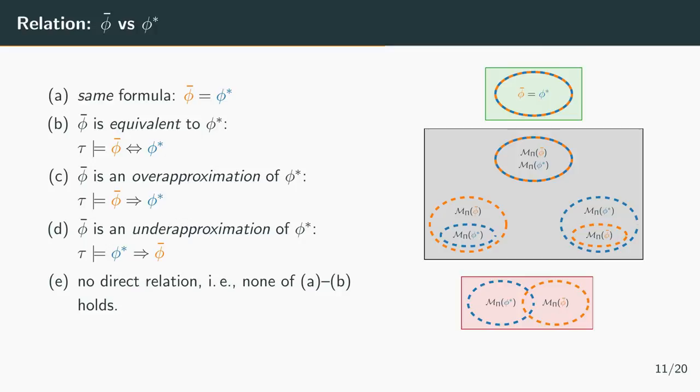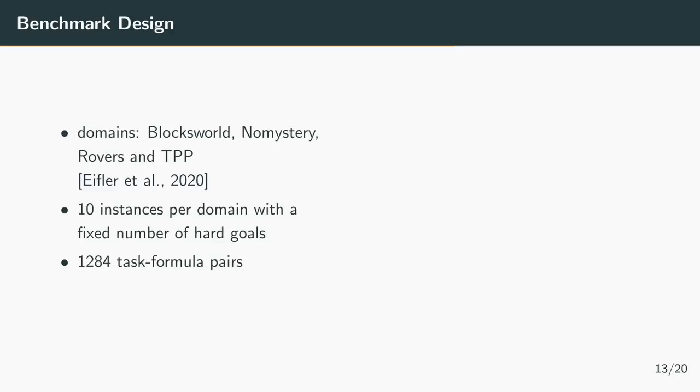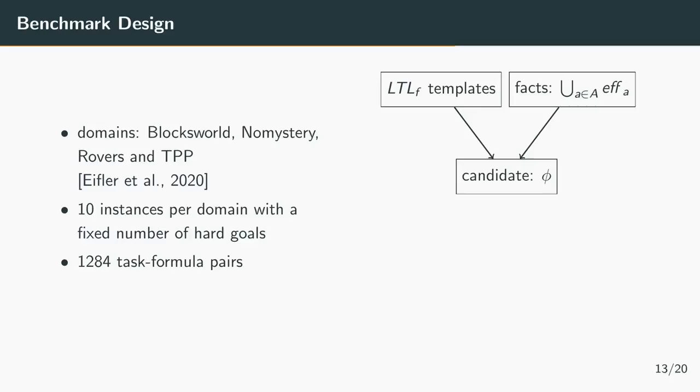Now I want to describe in more detail how we evaluated the approach. We didn't use real users but instead we simulated them with a hidden target formula. To generate a benchmark set we used four domains: blocksworld, numystery, rover, and ttp, each with 10 instances. To generate hidden target formulas we used the preferences in PDDL3 and the preferences commonly used in model checking as templates. We instantiated these templates with facts which are changed in the planning task. This gave us candidate formulas. Then for each of these candidates we checked if in a corresponding planning task there exists a plan which satisfies the preference and a plan which doesn't satisfy the preference. If this was the case we added the formula task pair to our benchmark.